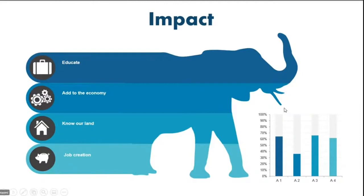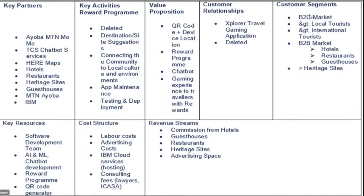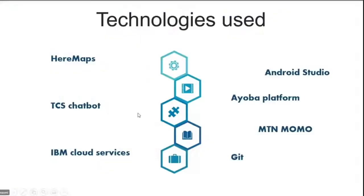These are our key partners: we use the TCS chatbot, Here Maps, as well as IBM for cloud services. The key activities will be connecting the community to local culture, environments, and systems. Our value proposition includes the QR code scanner, the game experience, and the chatbot. The key resources, cost structure, and revenue streams are outlined here. The technologies used are Here Maps APIs, TCS chatbot, IBM cloud services, Android Studio, the IOBA platform, MTN Momo, and Git.